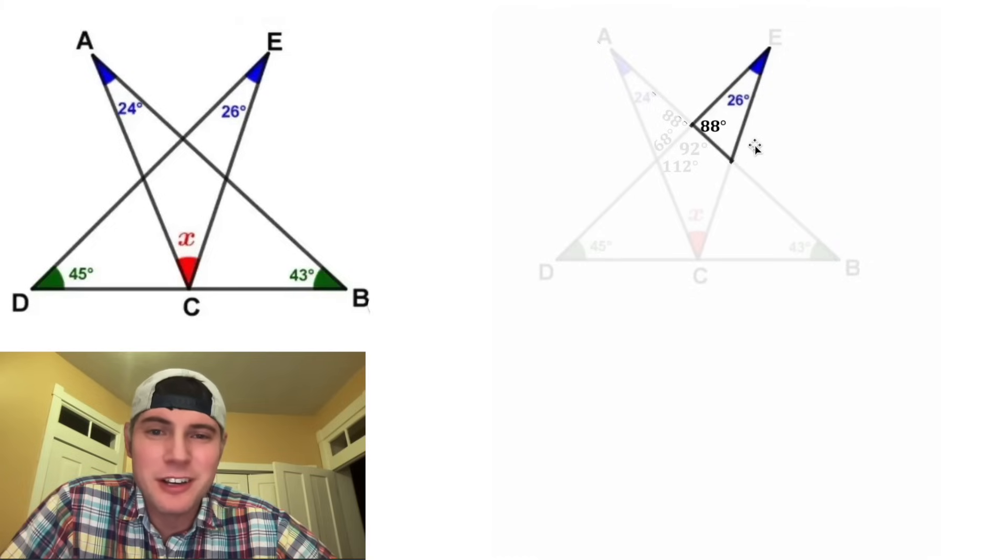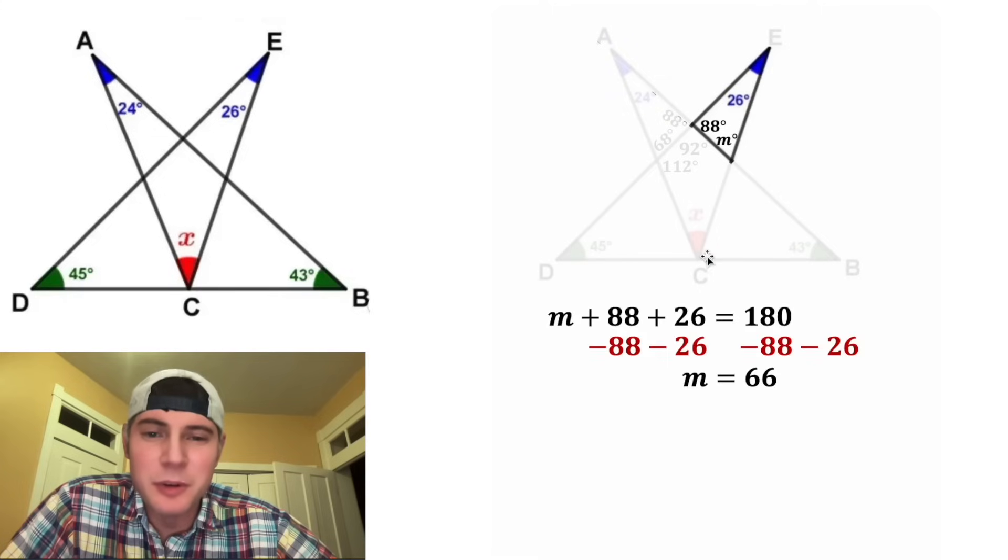And next, let's focus on this triangle right here. We can call this angle M. And then once again, we can do all this math, and we find that M is equal to 66.